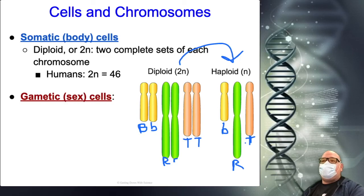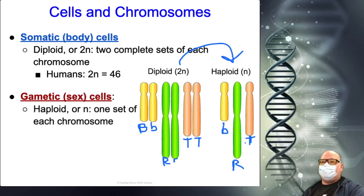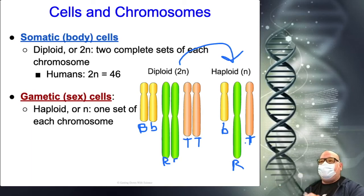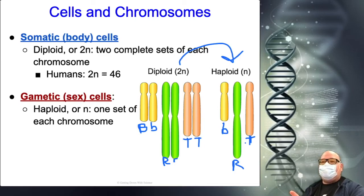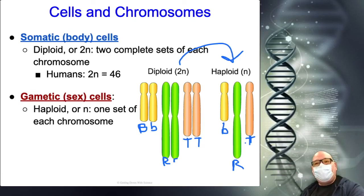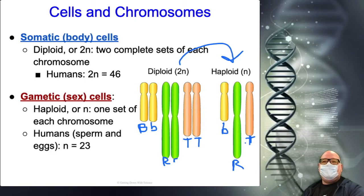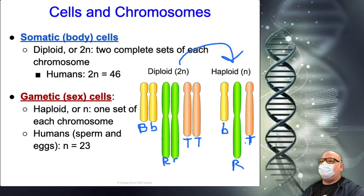Haploid cells have one set of each chromosome — the male gives one, the female gives one, and the offspring go back to diploid with a copy from mom and a copy from dad. In humans, that haploid number is 23.